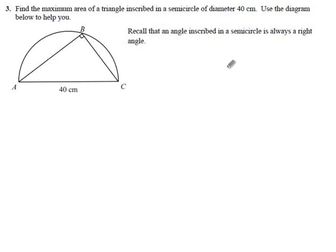Find the maximum area of a triangle inscribed in a semicircle of diameter 40. Use the diagram below to help you. If this triangle has vertices A, B, and C, then it has sides a and its hypotenuse is b, which is a little annoying if you're used to the Pythagorean theorem in its standard form, but we can deal with it.